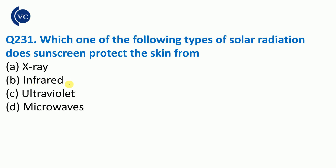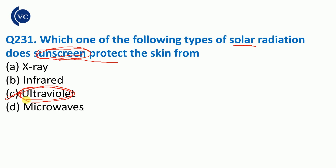Next question: which type of solar radiation does sunscreen protect the skin from? The sunscreen is used on the skin to prevent sunburn and tanning. We protect the skin from ultraviolet radiation. Sunscreen protects the skin from ultraviolet rays.